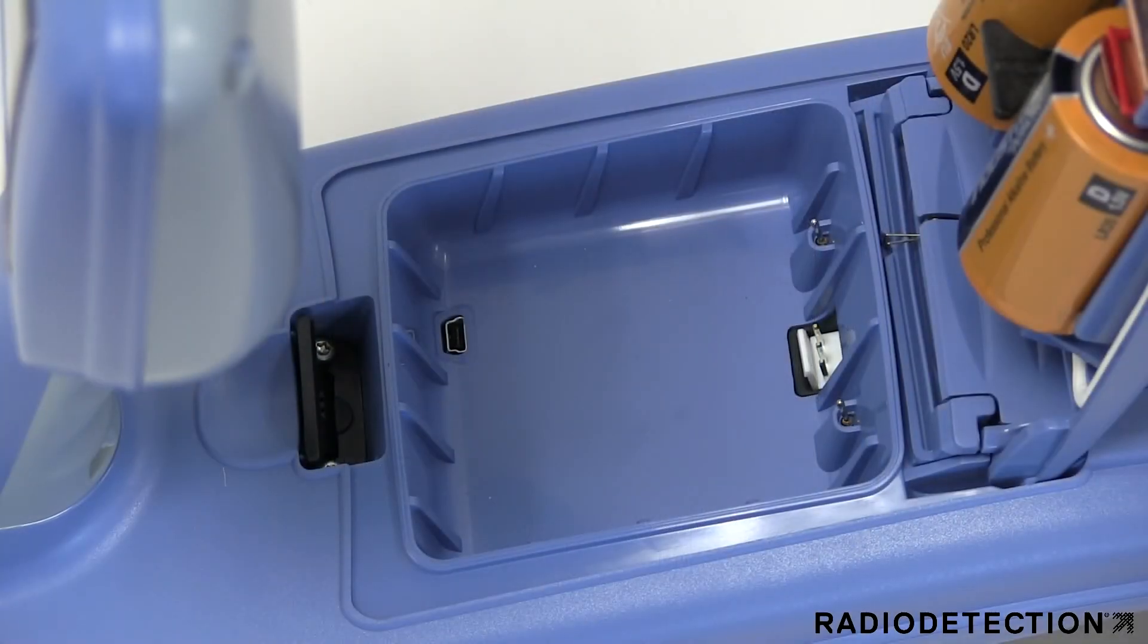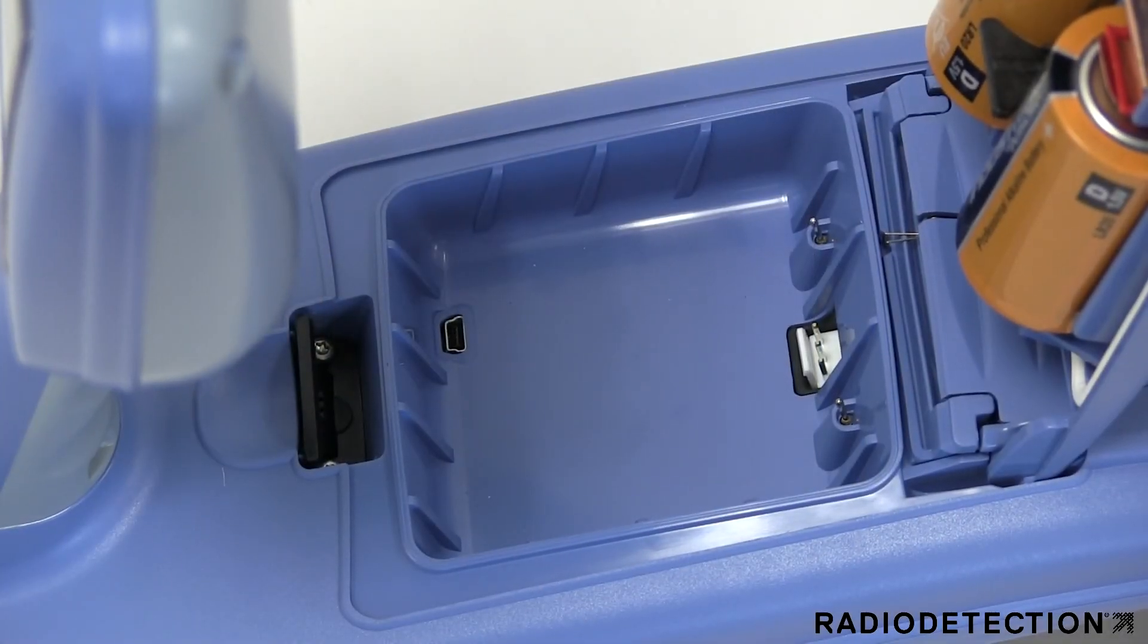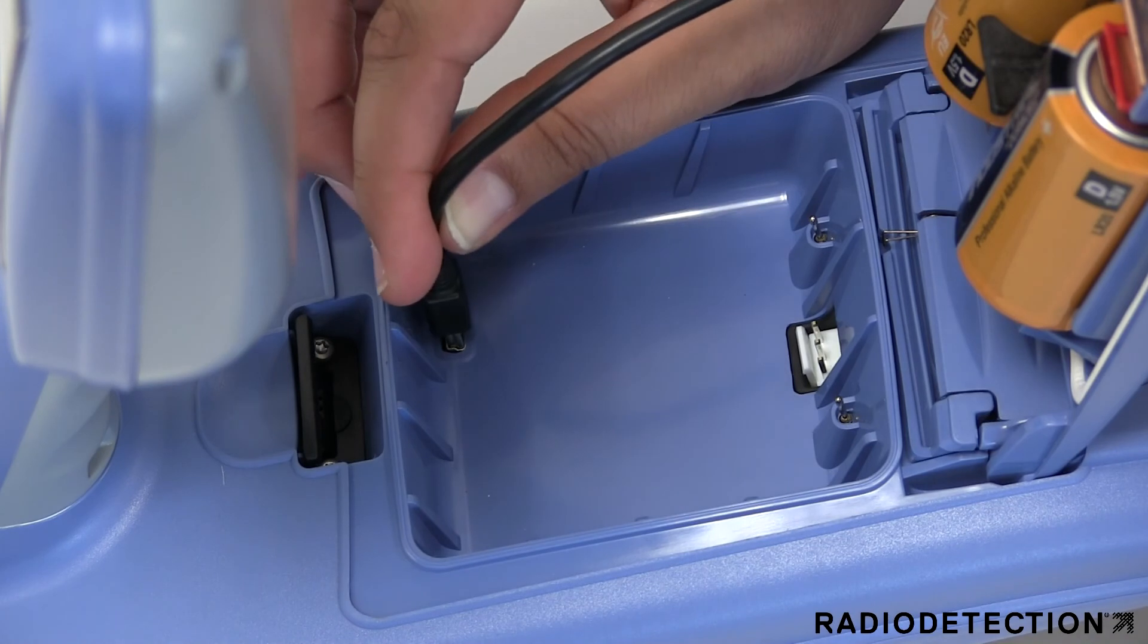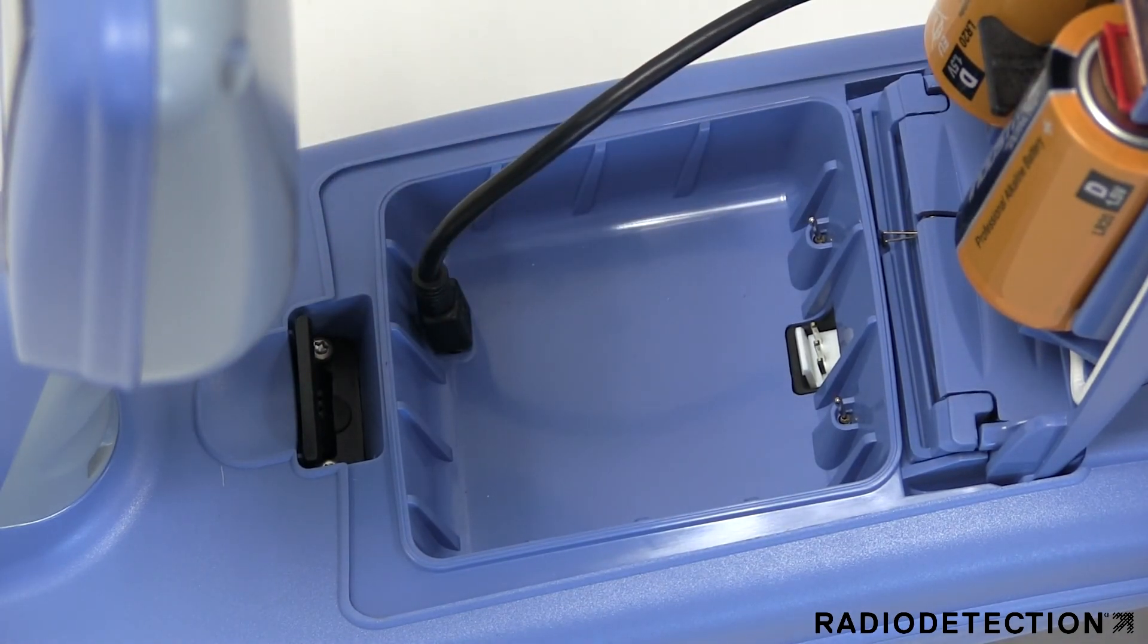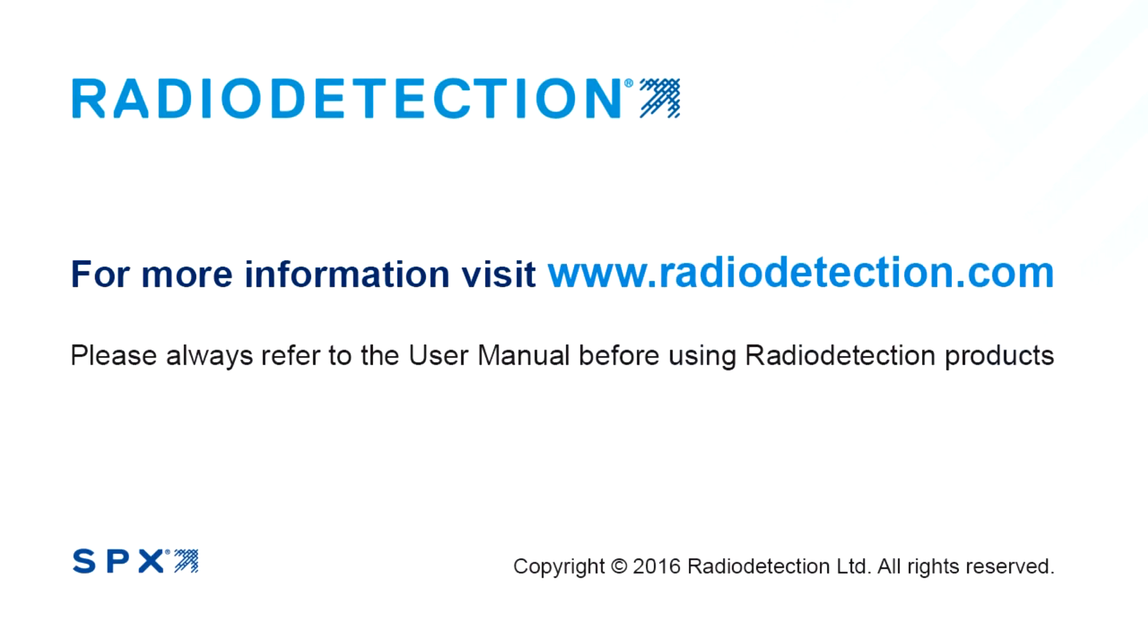Underneath the battery compartment, you will find a USB socket that can be used to connect the locator to RD Manager, allowing you to update the software and transfer data. RD Manager can be downloaded for free from www.radiodetection.com.